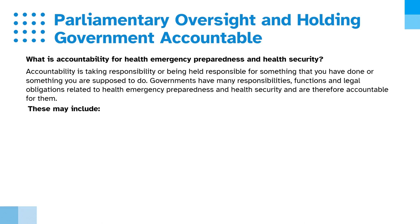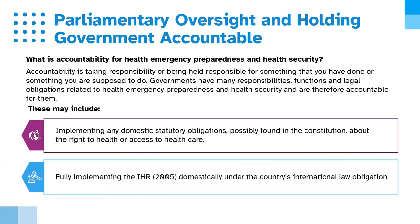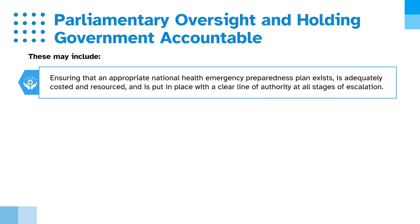These may include implementing any domestic statutory obligations, possibly found in the constitution, about the right to health or access to health care; fully implementing the IHR domestically under the country's international law obligation; ensuring that an appropriate national health emergency preparedness plan exists, is adequately costed and resourced, and is put in place with a clear line of authority at all stages of escalation.